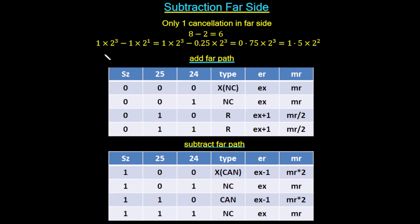An example of subtraction with cancellation: 8 minus 2 equals 6. Eight can be written as 1×2³ and two as 1×2¹. To subtract, we must align exponents — the smaller exponent increases to 2³, meaning its mantissa must be halved twice: 0.5, then 0.25. So 2 becomes 0.25×2³. This is the alignment shift — aligning exponent values so we can proceed with the subtraction.